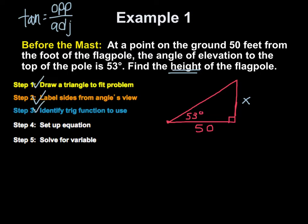Step four, set up the equation. So, it's going to be tangent of the angle. Now, the angle in my problem is 53 degrees. That's equal to the opposite side. So, if I'm at this angle, which is 53 degrees, opposite that is my X. Adjacent to that angle, 53 degrees, is 50. So, that's set up.